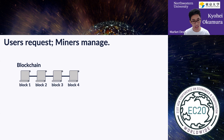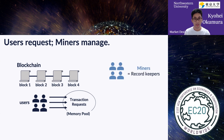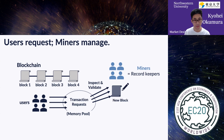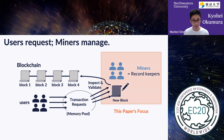The blockchain system works as follows. There are users of the electronic payment system, and they send their transaction requests online. Then there's another group of people called miners. Miners are record keepers in the system — they inspect and validate these transaction requests, integrate them into one block, and add it to the chain. Every time a block is added to the chain, the transactions contained in it are processed. This is the whole picture of the blockchain system, and our paper focuses on miners' behavior.